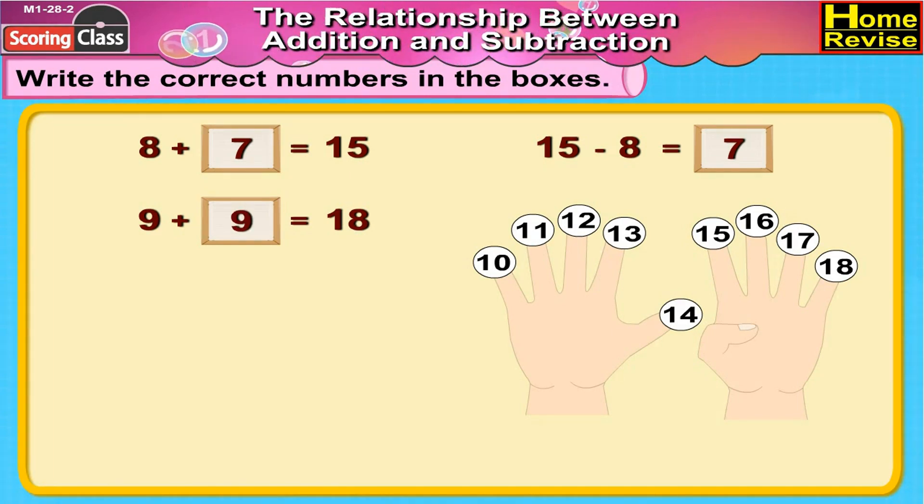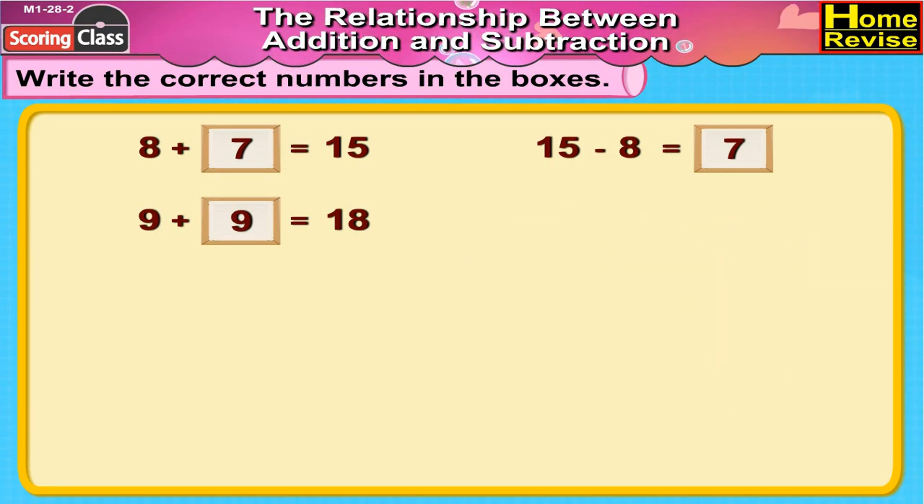9 plus 9 is equal to 18. Now 18 minus 9 is equal to how many? That's correct. 18 minus 9 is equal to 9.